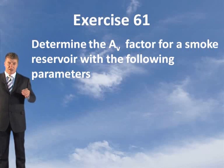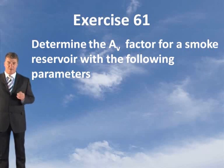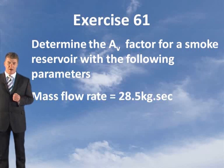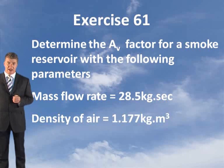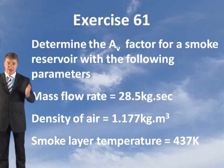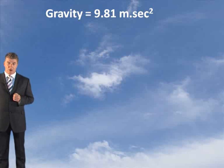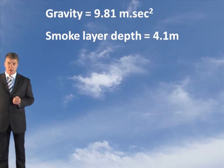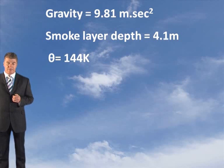Exercise. Determine the AV factor for a smoke reservoir with the following parameters. Your mass flow rate of smoke is 28.5 kilograms per second. Your density of air is 1.177 kilograms per meter cubed. Your temperature of your smoke layer was worked out at 437 degrees Kelvin. Acceleration due to gravity is 9.81 meters per second squared. Your smoke layer depth is 4.1 meters and your theta value is 144 degrees Kelvin.